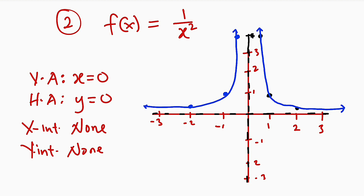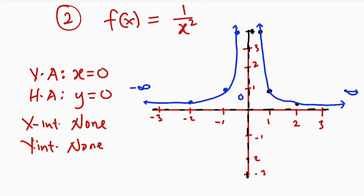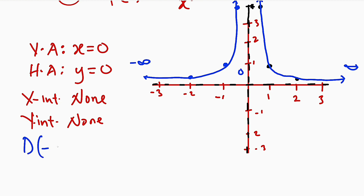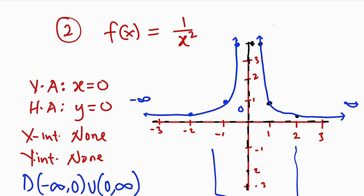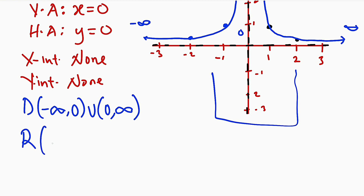Let us find the domain and range of y = 1/x². For the domain, x can be from negative infinity to 0 or from 0 to positive infinity, so the domain is (−∞, 0) ∪ (0, +∞). For the range, since y = 1/x² is always positive and never equals 0, y goes from 0 to positive infinity excluding 0, so the range is (0, +∞).